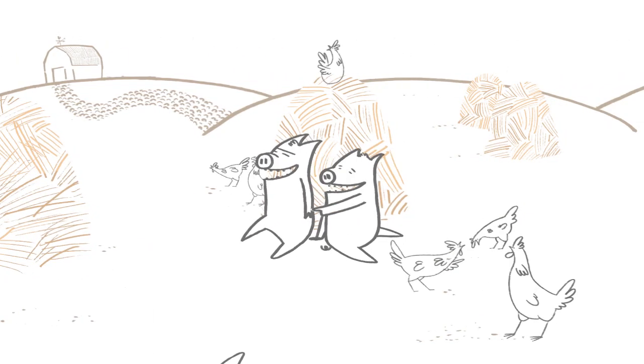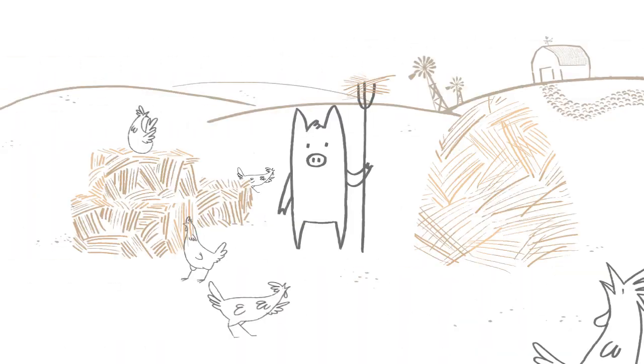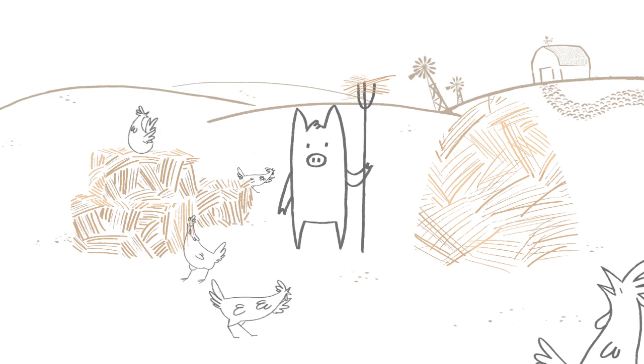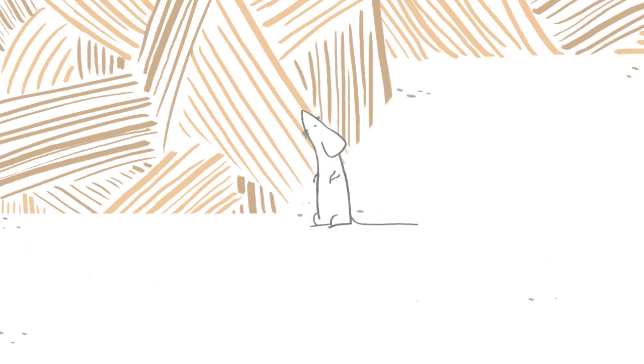All the farmyard animals laughed, saying it would get eaten by mice, go moldy, or burn down. Silly chickens, said the first little piggy. Straw has zero nutrients, so as long as you keep it dry and compact, no mice will come near it.